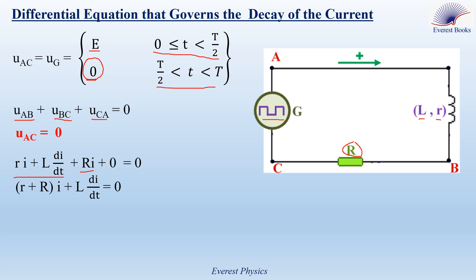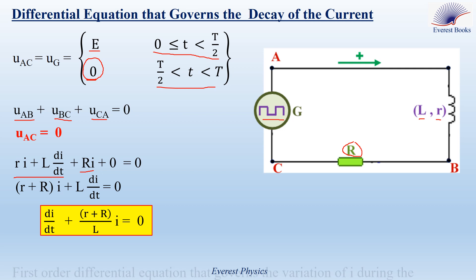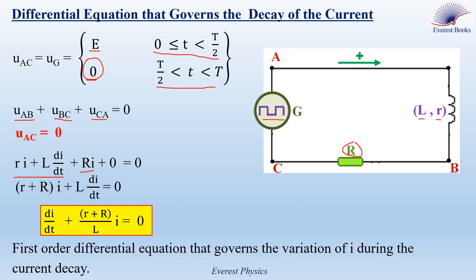Rearranging, we get (r + R)·i + L·di/dt = 0. Dividing the equation by L gives: di/dt + (r + R)/L · i = 0. This is the first-order differential equation that governs the variation of i during the current decay.